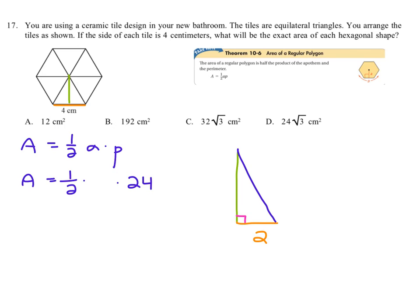So anytime we know the short leg is two, we know that the long leg, or in this case the apothem, is two times the square root of three. So that's what we've got here for an apothem length. Two root three. And we're going to write that into the formula then. Two root three.